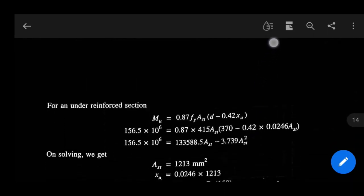Now for an under-reinforced section, MU equals 0.87 FY AST into d minus 0.42 XU.